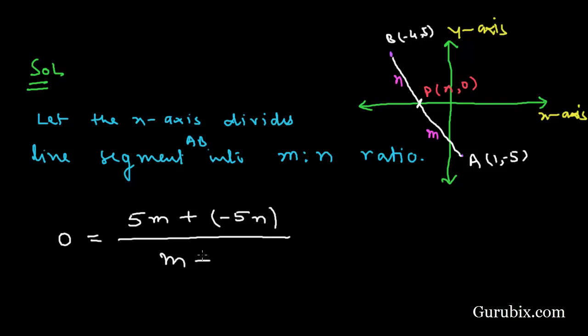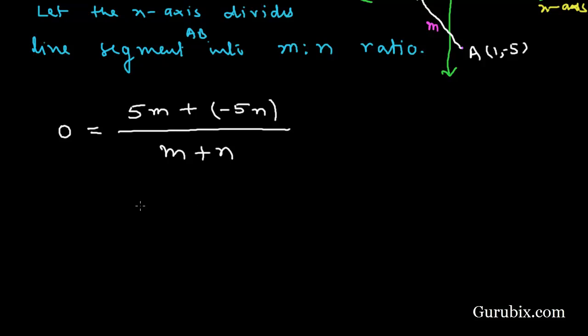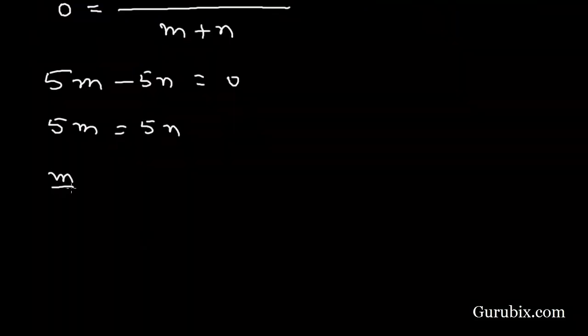If we further calculate this value, this equals 5m - 5n = 0. This equals 5m = 5n, which means m/n equals 5/5.